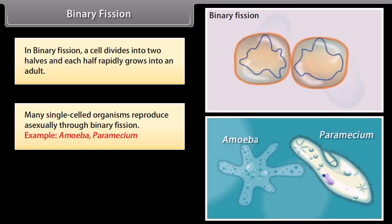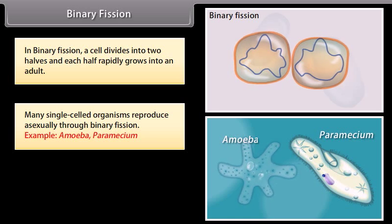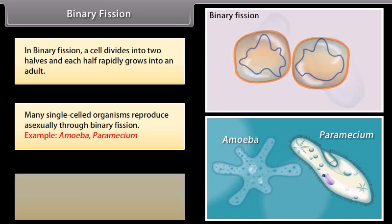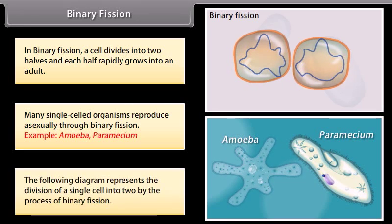Examples of binary fission include Amoeba and Paramecium. The following diagram represents the division of a single cell into two by the process of binary fission.